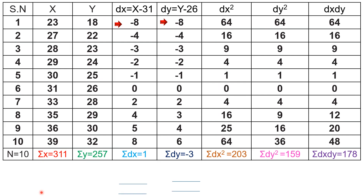We already have the number of data, x values and y values. Now we calculate sigma dx, which is x minus assumed mean. The dx values are: 23 minus 31 = minus 8, 27 minus 31 = minus 4, 28 minus 31 = minus 3, 29 minus 31 = minus 2, 30 minus 31 = minus 1, 31 minus 31 = 0, 33 minus 31 = 2, 35 minus 31 = 4, 36 minus 31 = 5, 39 minus 31 = 8.